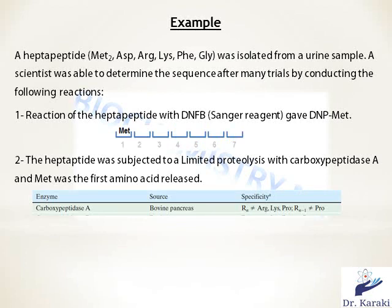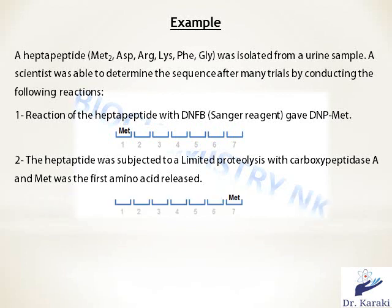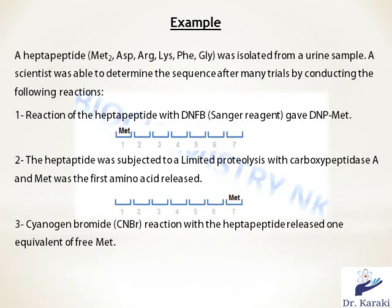In the second reaction, the heptapeptide was subjected to limited proteolysis with carboxypeptidase A, and methionine was the first amino acid released. Carboxypeptidase A is used to determine the C-terminal amino acid — it cleaves all C-terminal amino acids except arginine, lysine, and proline, provided that the amino acid preceding the last one is not proline. The result indicates that methionine is the C-terminal amino acid.